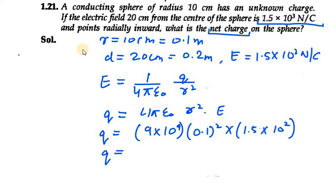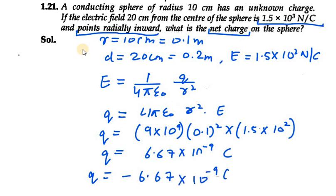The solution is 6.67 × 10⁻⁹ coulombs. However, q must be negative since the field points radially inward. Therefore, the answer is -6.67 × 10⁻⁹ C, or -6.67 nanoCoulombs.